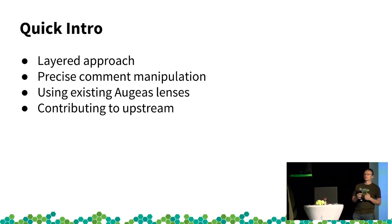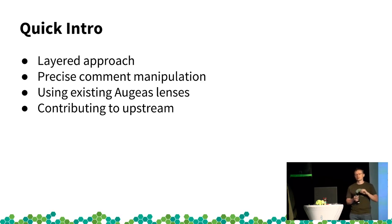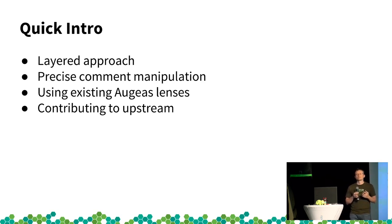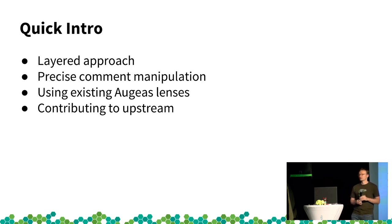The advantage over the old solution is precise comment manipulation — not just that no comments should be removed, but also that you can add smart comments like 'do not touch this, it's configured by YaST.' It uses a lot of Augeas lenses, so we don't need to write our own parsers. We're also contributing to Augeas upstream — we've already fixed one or two things and improved some lenses where parts didn't fit.